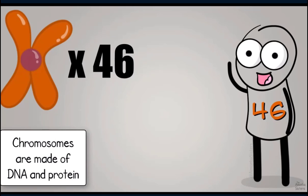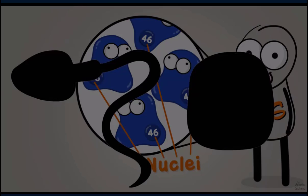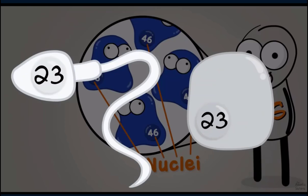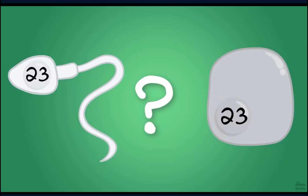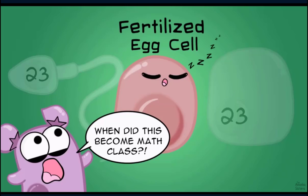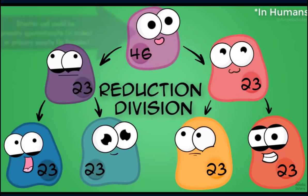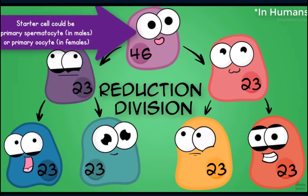Meiosis doesn't make body cells — it makes sperm and egg cells, otherwise known as gametes. Humans have 46 chromosomes in most body cells, but human sperm and egg cells have only 23 chromosomes. If a sperm cell has 23 chromosomes and an egg cell has 23 chromosomes, when they come together that makes 46 — allowing the newly formed fertilized egg to develop into a human. Meiosis is what we call a reduction division, going from 46 to 23 chromosomes.